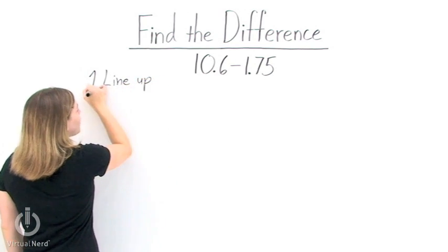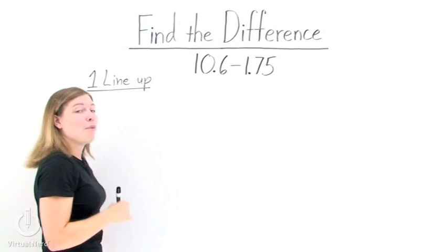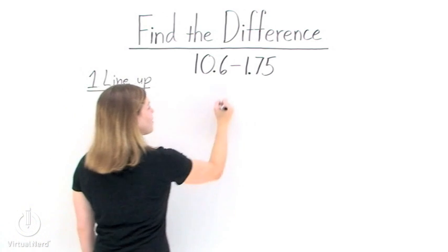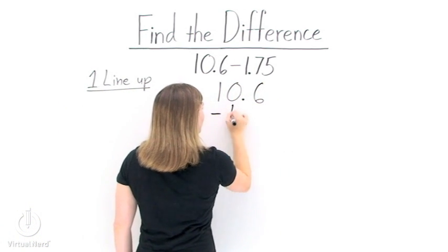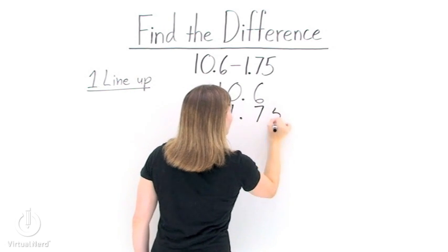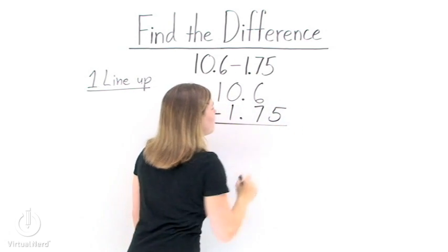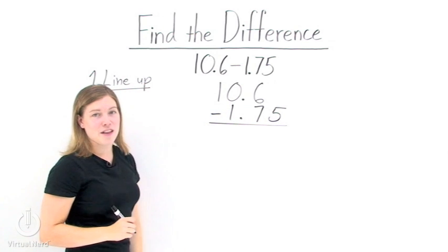Step number one, we'll be setting up our subtraction normally, but we need to make sure to line up our decimal points when we do this. So we'll have something that looks like this: 10.6 minus 1.75. Notice that the decimal points are lined up, one right on top of the other.